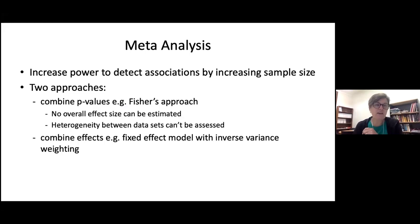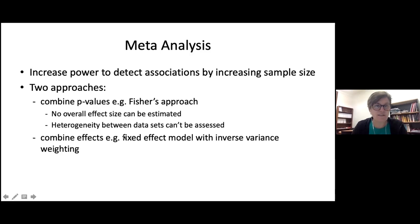We didn't get anywhere just looking at MAS alone and were unable to replicate anything in OATS. So what can we do? We can combine our two datasets together in a meta-analysis to increase sample size and therefore increase power. There are two common approaches: combining p-values using Fisher's approach, or combining effects using a fixed-effects model with inverse variance weighting — the latter is the one most often used, and there's a nice software package to perform meta-analyses across every single SNP the two datasets have in common.